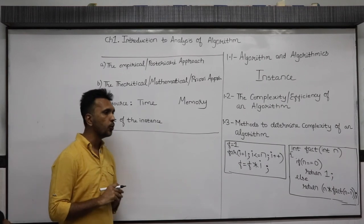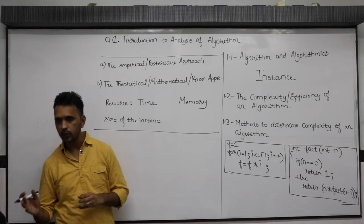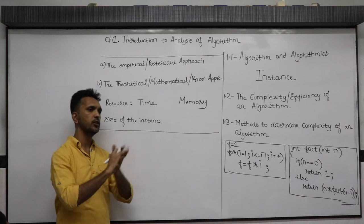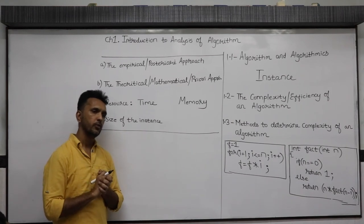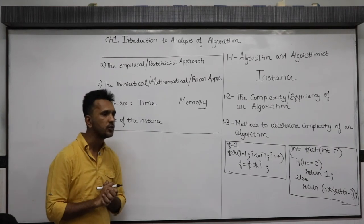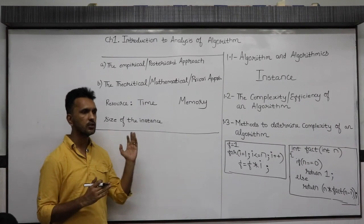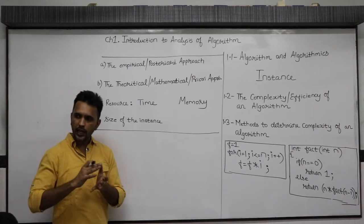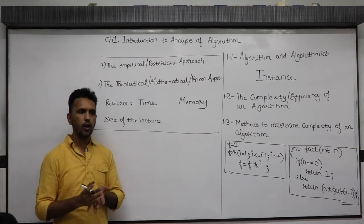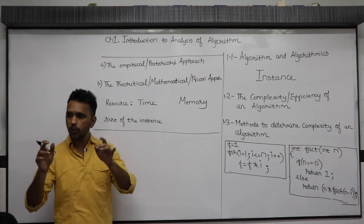For example, if you are doing a quicksort program and your quicksort program is sorting 28 elements, then the size of the instance is 28, because your program worked on 28 elements. Instance means valid input, so size of the instance means the number of elements in that valid input — or better: the number of elements on which your program works.